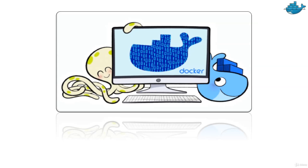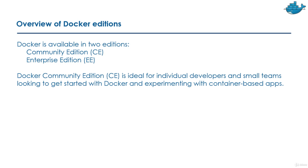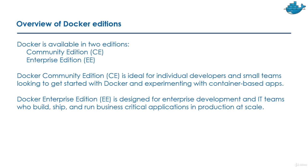Hello and welcome. In this lecture we are going to talk about an overview of Docker editions. Docker is available in two editions: Community Edition (CE) and Enterprise Edition (EE). Community Edition is ideal for individual developers and small teams looking to get started with Docker and experimenting with container-based apps.